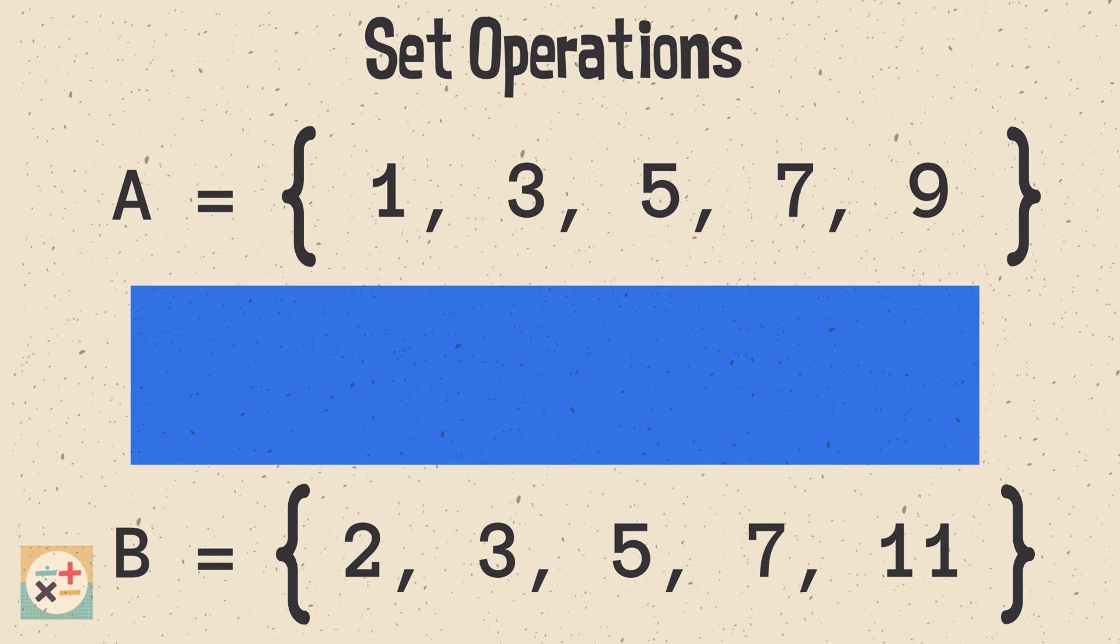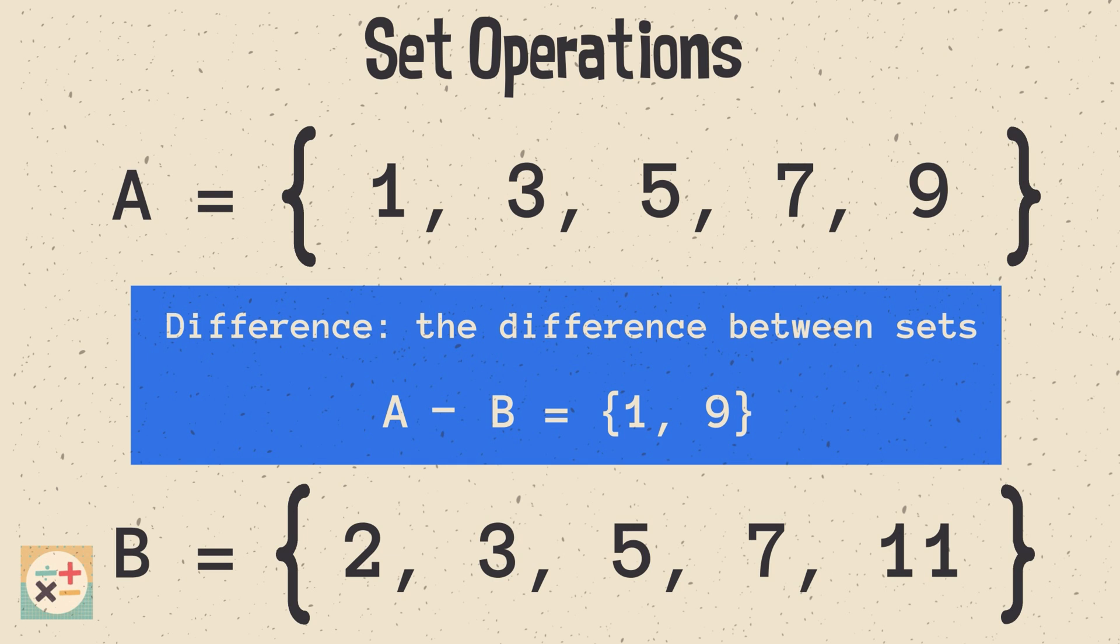Now let's look at another set operation, difference. As the name suggests, we are finding the difference between sets. We denote difference using the minus symbol. In this example, the difference, denoted as A minus B, includes all elements that are in A but not in B.